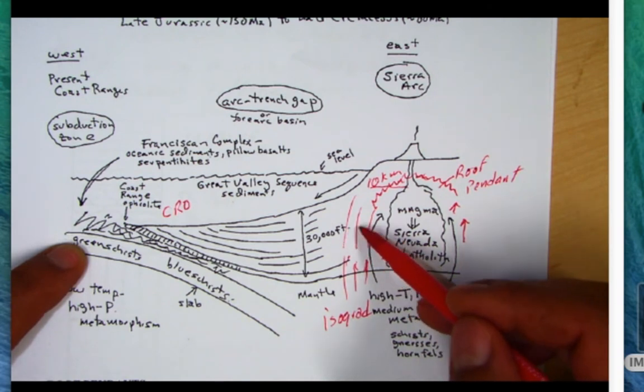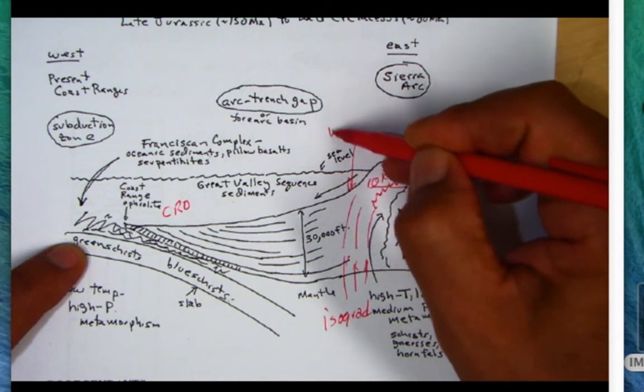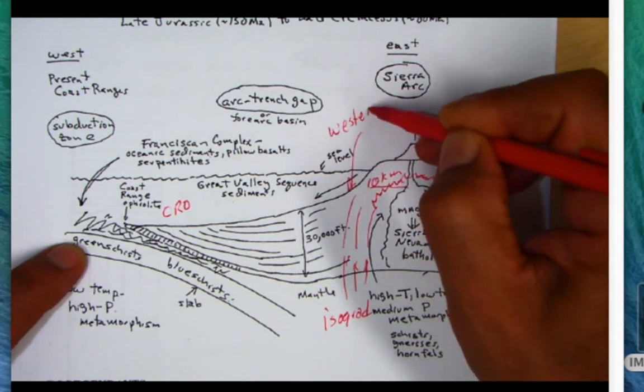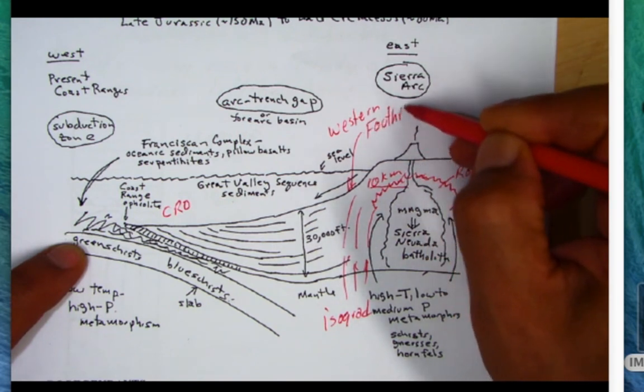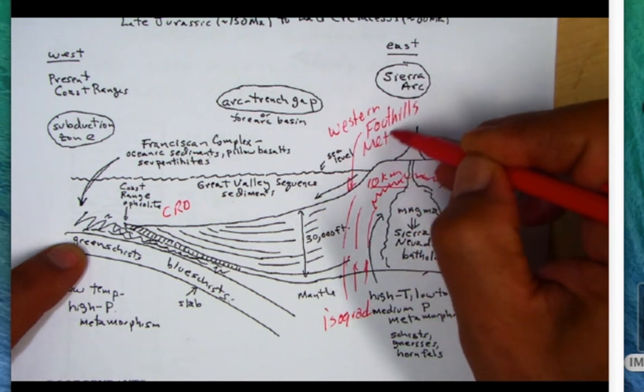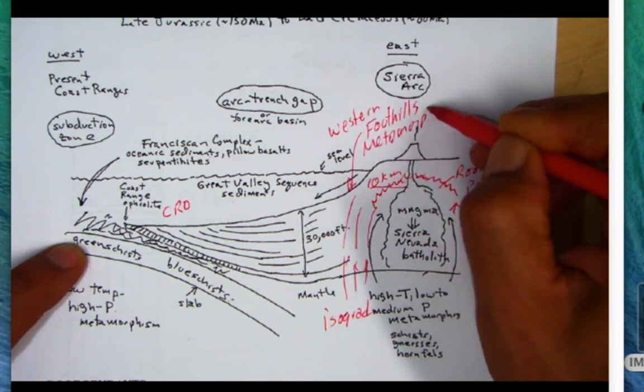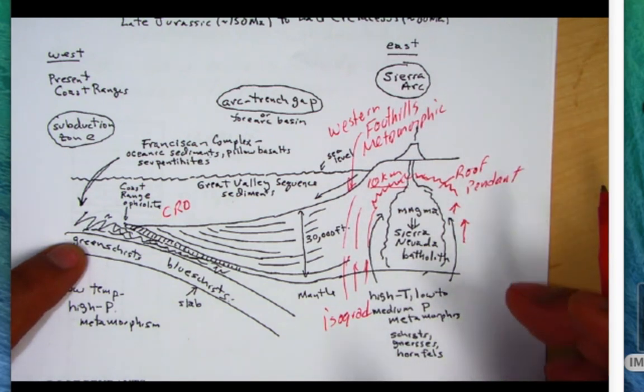In this region here we see the Western Foothills Belt, the Western Foothills Metamorphic Belt. That's where we'll see primarily the greenschist facies rock we're looking for there. The style of metamorphism is indicative of a plate tectonic boundary.